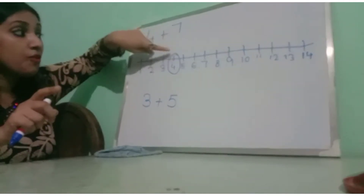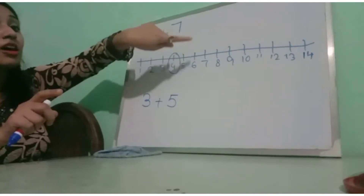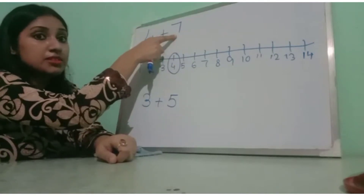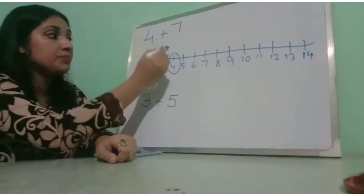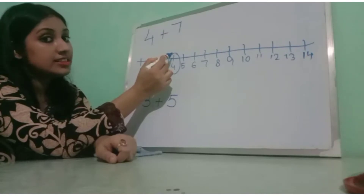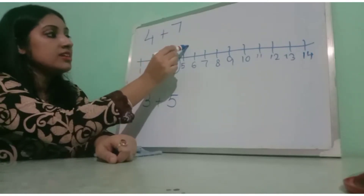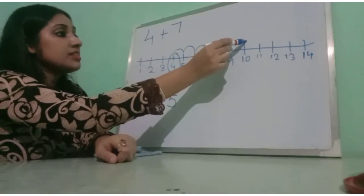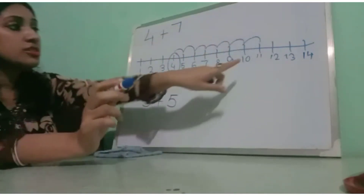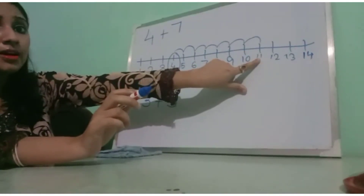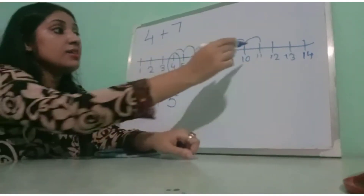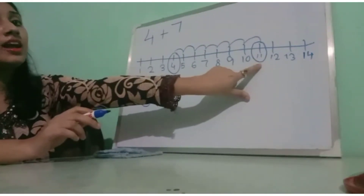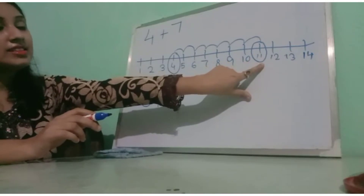4 के घर से 7 count करके जाएंगे — एक-एक करके 7 times count करेंगे। तो चलो count करते हैं: 1, 2, 3, 4, 5, 6, 7 — तो 7 कौन से number के घर में आया? 11 के घर में आया। तो यह हो गया 11, हम लोग का answer।